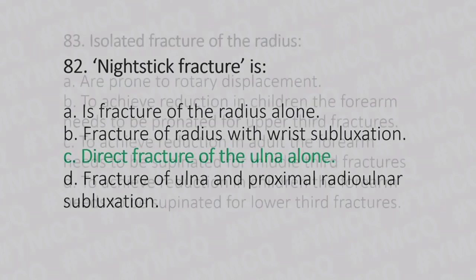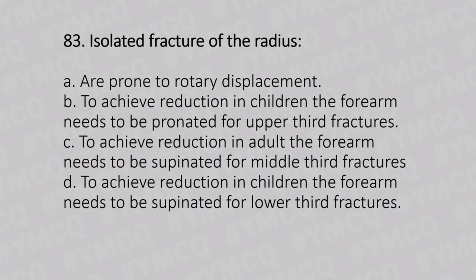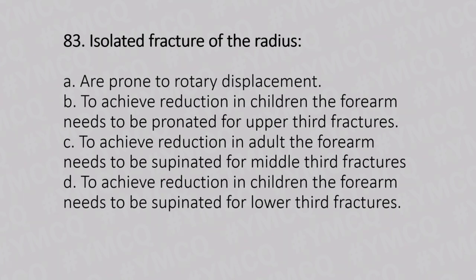Now let's move to question number 83. Isolated fracture of the radius. Option A: are prone to rotatory displacement. Option B: to achieve reduction in children, the forearm needs to be pronated for upper third fractures. Option C: to achieve reduction in adults, the forearm needs to be supinated for middle third fractures. Option D: to achieve reduction in children, the forearm needs to be supinated for lower third fractures. And the answer is Option A, are prone to rotatory displacement.